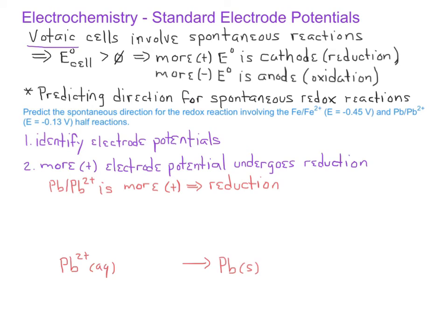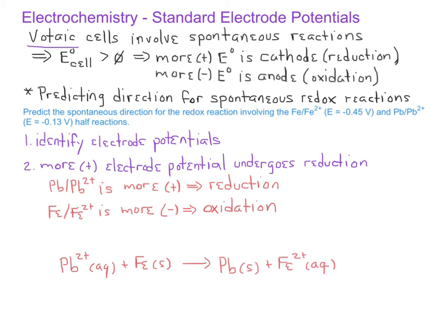For the iron/iron 2+ half-reaction, since it has the more negative electrode potential, it will undergo oxidation — meaning iron metal is on the reactant side and iron 2+ ions are on the product side. Since both half-reactions involve a transfer of two electrons, we do not need to worry about balancing coefficients. The overall redox reaction will be lead 2+ ions reacting with iron metal to produce lead metal and iron 2+ ions.